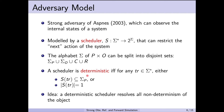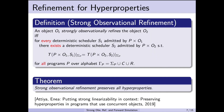We can now define a deterministic scheduler as a scheduler that for any given trace either allows a set of program actions as the next action or produces exactly one next action. In other words, if the next action is an internal action of the object, a call or a return, then the scheduler produces exactly one next action. The idea is that a deterministic scheduler resolves all of the non-determinism of the object.